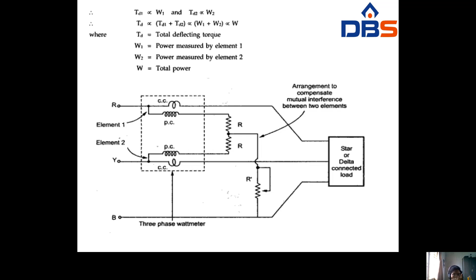In the three-phase wattmeter diagram, element one consists of one current coil connected with one pressure coil, and element two is similar. A resistance is connected to compensate for mutual interference between the two elements. The loads connected to the wattmeter are either star-connected or delta-connected.